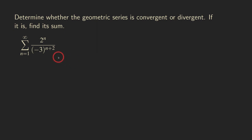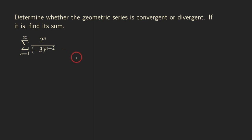So how do you tell that it has a negative common ratio? If you look at the 2 to the n here, the base 2 is positive. But for the base right here, the negative 3 is negative. So now when you put this series in the standard geometric series form, you can actually tell that the common ratio will be negative.